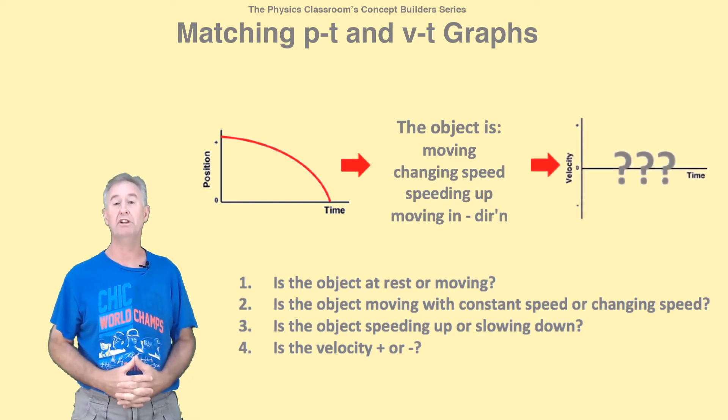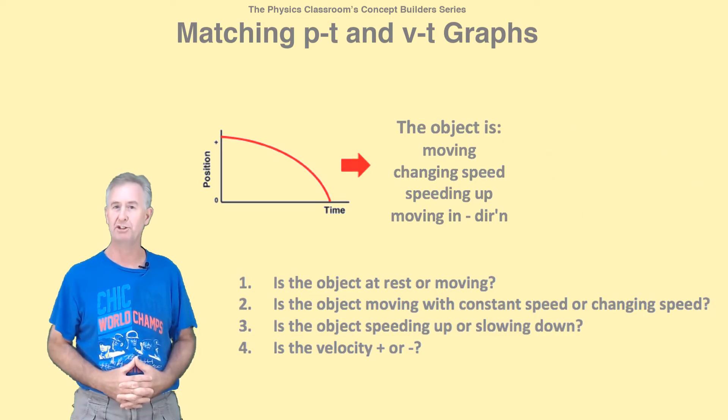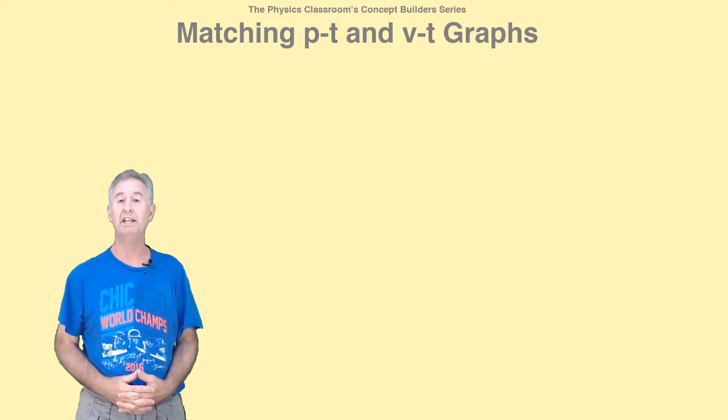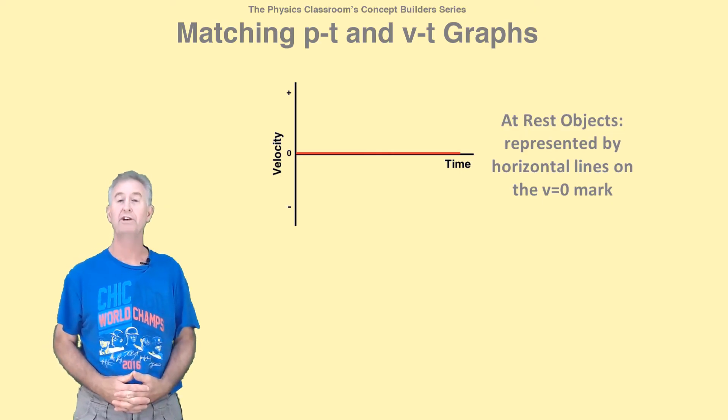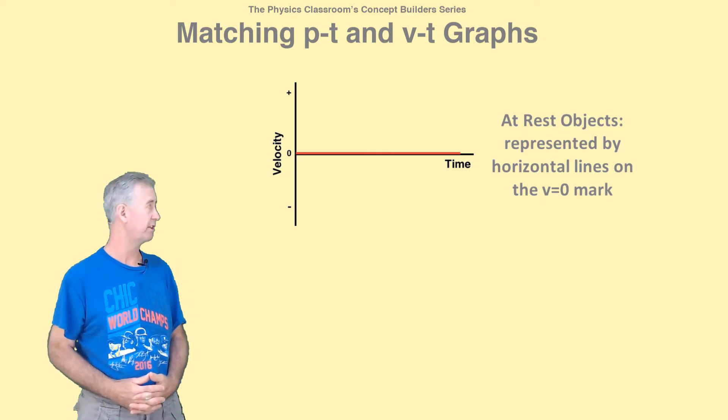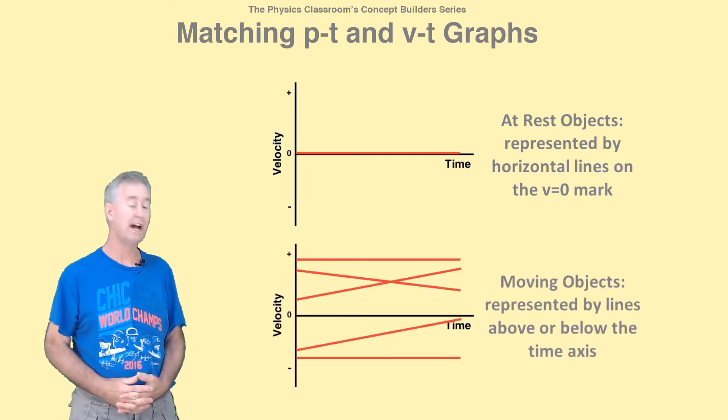Now I must translate these words into features of a VT graph that match it. So here's the skinny on VT graphs. At rest objects have a velocity of zero, so the line representing them is on the time axis. But moving objects have a velocity that's not zero. They're located above or below the time axis.